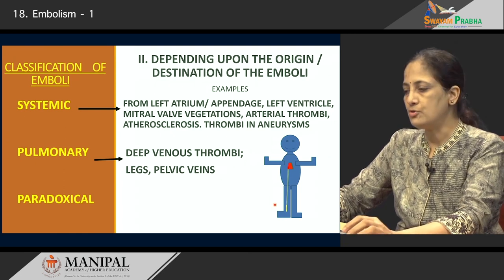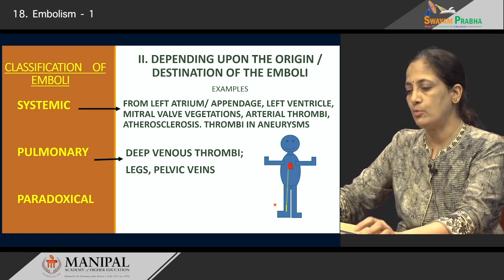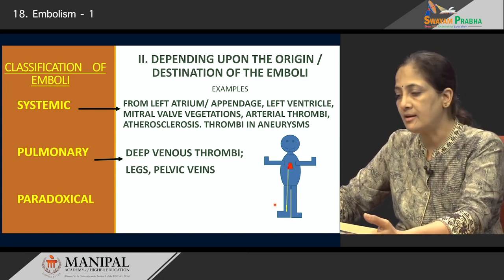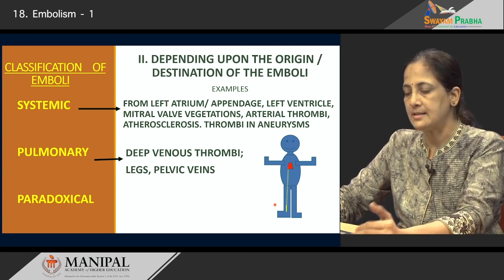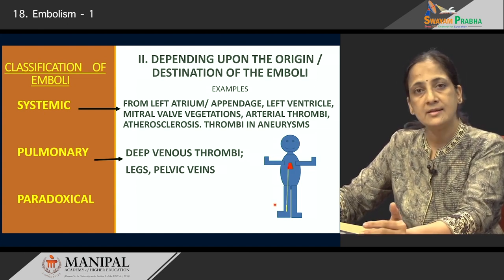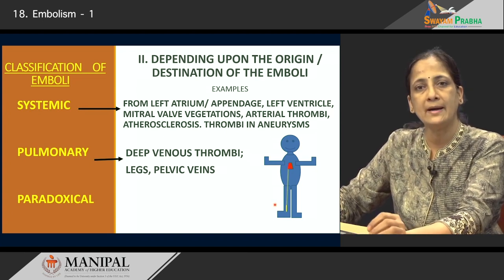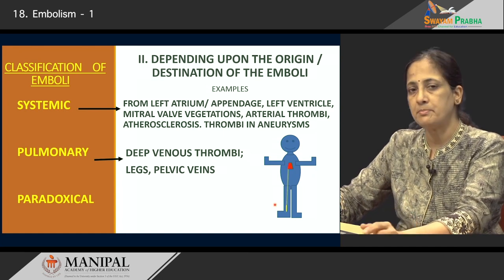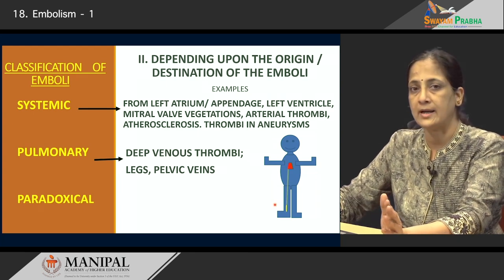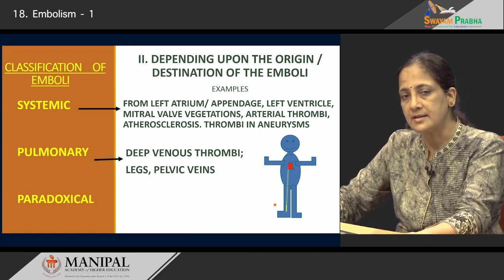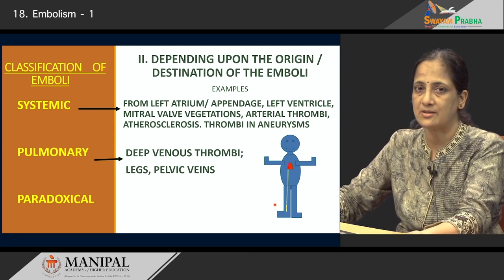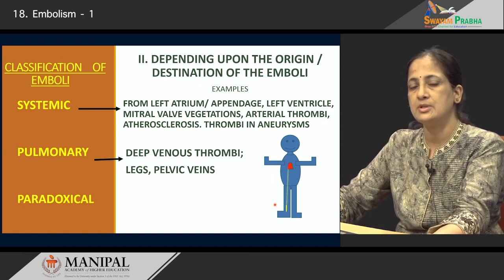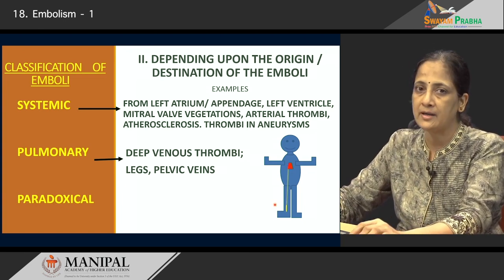Pulmonary thrombi, on the contrary, usually are derived from the veins, especially the deep veins of the leg — the iliofemoral vein in specific. They can come from the popliteal veins, the veins in the calf muscles, and the pelvic veins. Besides these two major categories of systemic and pulmonary emboli, there is a third category called a paradoxical embolus. This embolus originates from the venous side of the circulation, bypasses the pulmonary arterial bed, and goes through a patent foramen ovale, an atrial septal defect, or a ventricular septal defect. It enters the left side of the heart and is then carried into the systemic circulation. So a venous embolus passing through the heart, bypassing the lung, and gaining access to the arterial or systemic circulation is known as a paradoxical embolus.